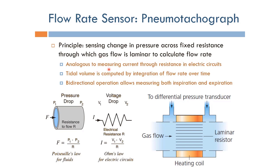This is analogous to measuring current through resistance in electric circuits. For example, if you would like to measure the current, we know the resistance, and if we know the voltage drop, we can compute the current as the voltage drop over the resistance. This is Ohm's law in electric circuits.